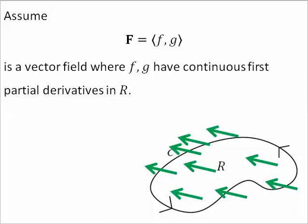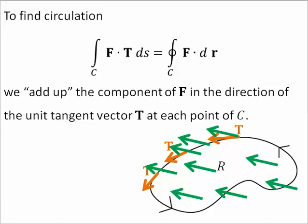Now, let F be a vector field whose components have continuous first partial derivatives in R. Defining circulation, we add up the components of F in the direction of the unit tangent vector at each point on the curve.